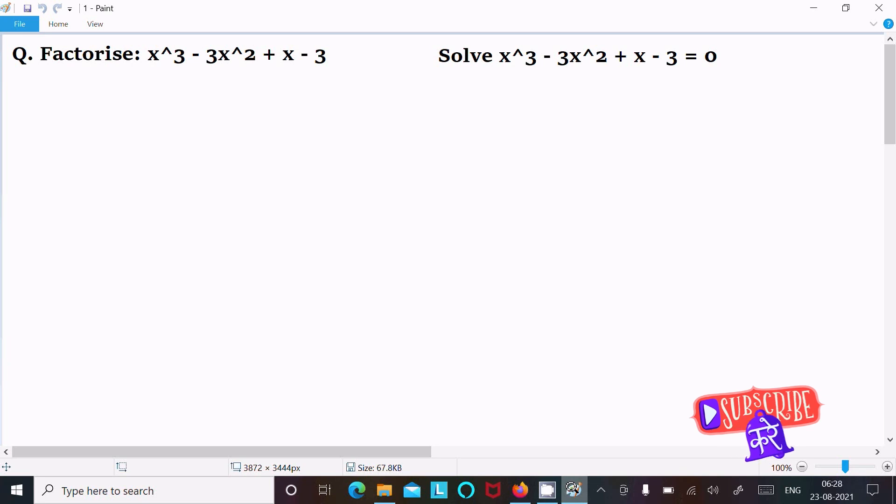In this video lecture I am going to factorize x³ - 3x² + x - 3 and going to solve x³ - 3x² + x - 3 = 0. So let's see the answer.